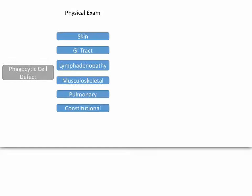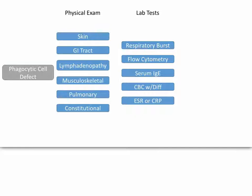Suppose you're suspecting a phagocytic cell defect. On physical exam you may find problems in skin, GI tract, lymph nodes, musculoskeletal, pulmonary, or constitutional signs. Lab tests would include the respiratory burst — looking for chronic granulomatous disease — flow cytometry to look at levels of the different leukocytes, serum IgE, and CBC with differential. All sources I've read say the manual differential is going to be more accurate and give better information than the automated differential. You're also going to want to look at the ESR and CRP.